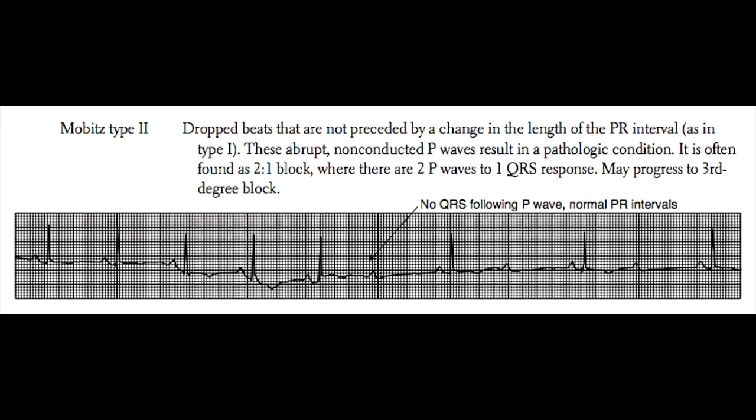Mobitz type 2 AV nodal block is different. In Mobitz type 2, the PR interval does not lengthen from beat to beat, but then suddenly you will see a P wave — visible in the middle of this strip — with no QRS complex after it. The 6th, 8th, and 10th P waves do not have QRS complexes following them. Mobitz type 2 is generally caused by either calcification of the His-Purkinje system or a myocardial infarction that damaged part of the conduction system. It is considered a more serious condition, and these patients often progress to 3rd degree AV block and generally will require a pacemaker.